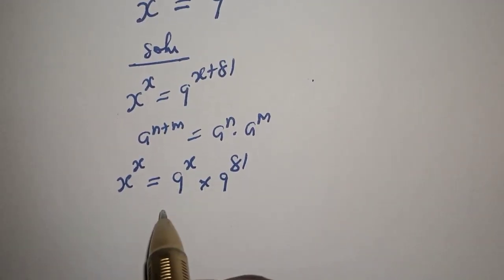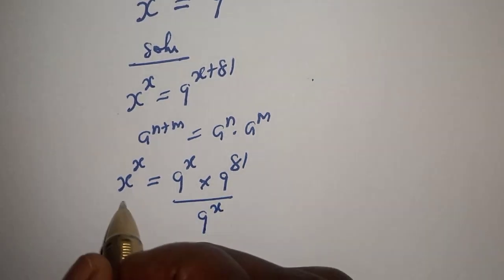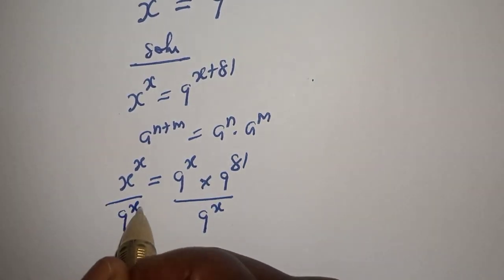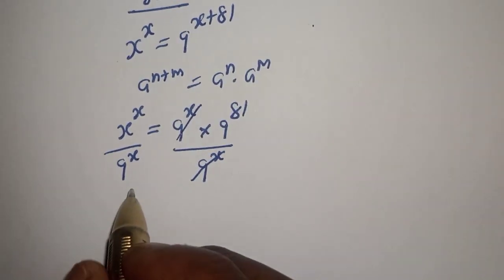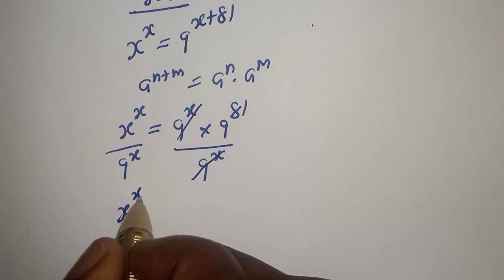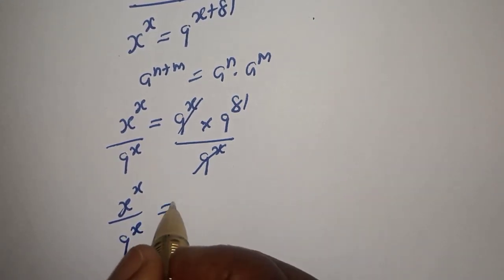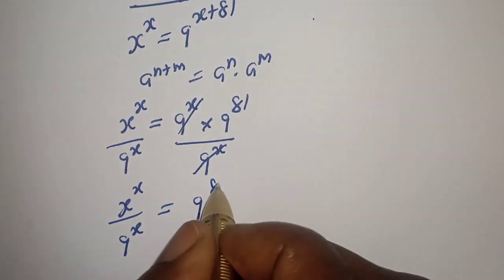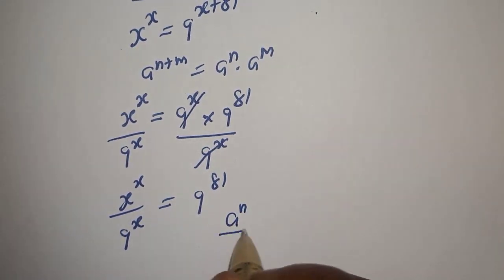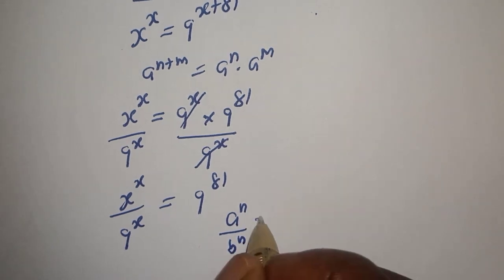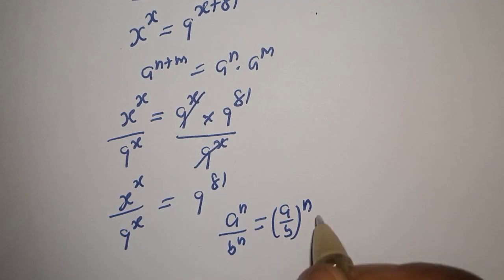Now, let's divide both sides of this equation by 9 raised to power S. This will cancel that term, giving us S raised to power S over 9 raised to power S equals 9 raised to power 81. Using the rule that A raised to power N over B raised to power N equals A over B raised to power N.